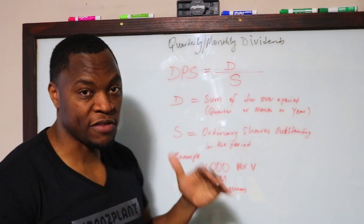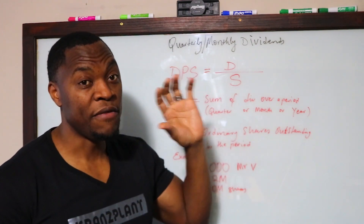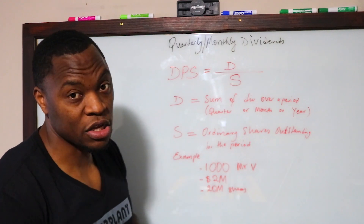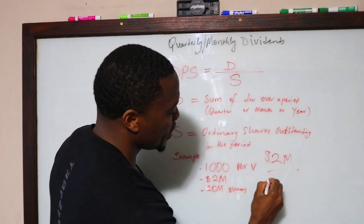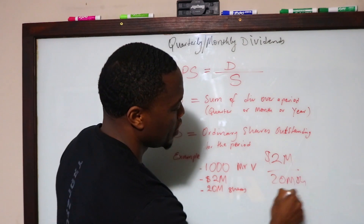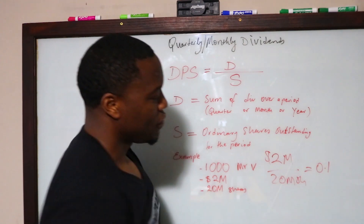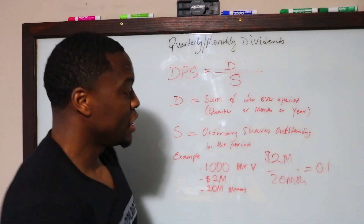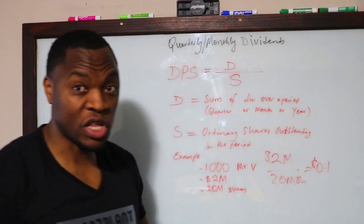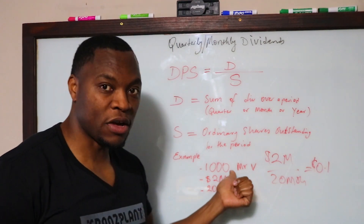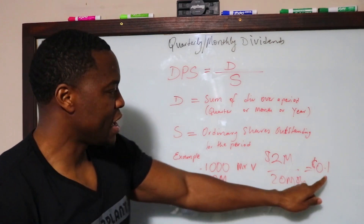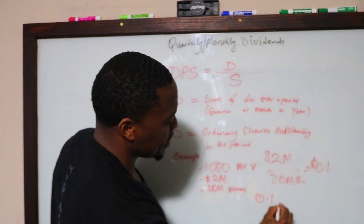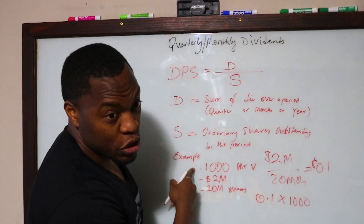Now you can calculate your dividends per share very easily. You divide $2 million by the 20 million shares that are outstanding, and that gives you 0.1 — so that is the dividend per share. You get about one cent per share. In your case, you bought a thousand shares of Mr. V, so you take 0.1 times 1,000, which is the number of shares you bought.